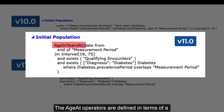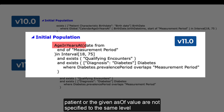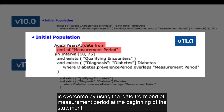The age at operators are defined in terms of a date time duration calculation. This means that if the age of the patient or the given as of value are not specified to the same level of precision, there will be uncertainty over the range of possible values, causing comparisons to return null. This is overcome by using the date from end of measurement period at the beginning of the statement.